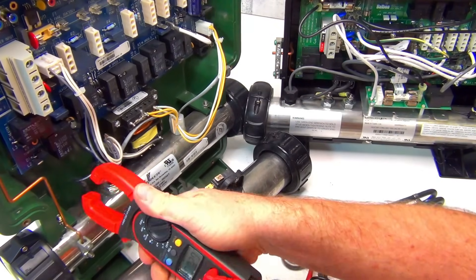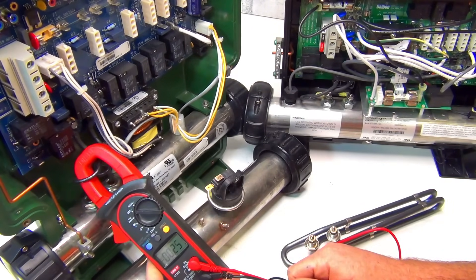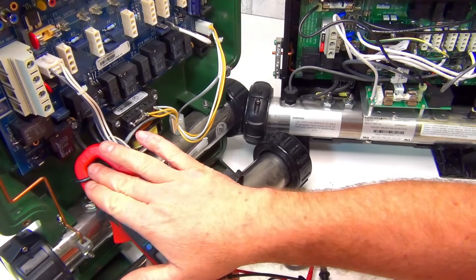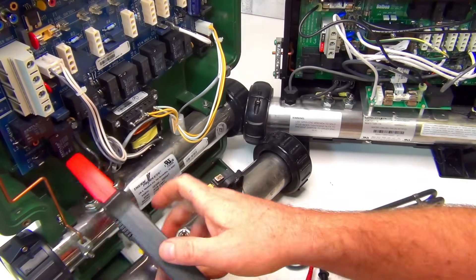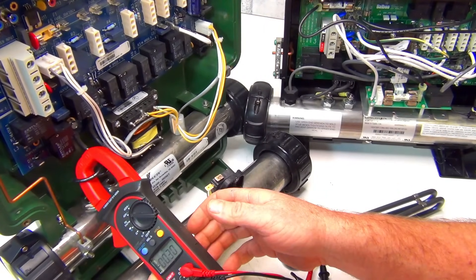And then the same as this dial here, you can check it just leaning it on this piece here, either side, and you get your amps.